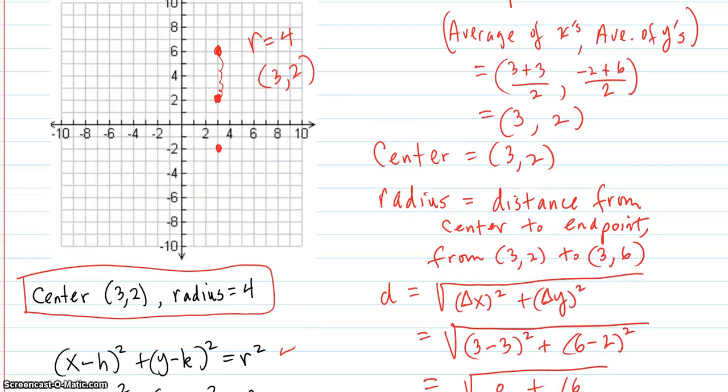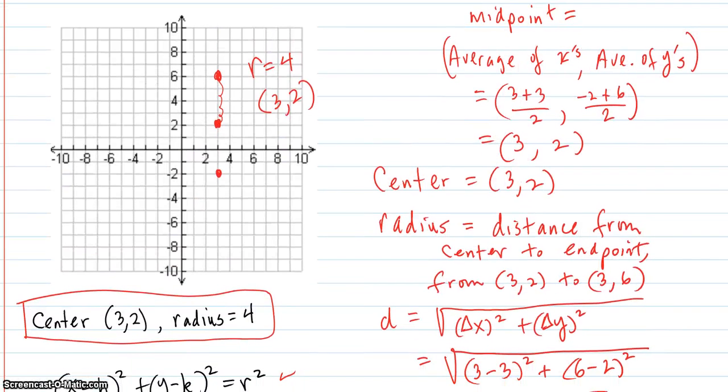But let's say it was more complicated, and you couldn't just eyeball so easily what the center was. Then the midpoint of this point and that point would be the center. And the midpoint of two points is the average of the x's, comma, the average of the y's as a point.